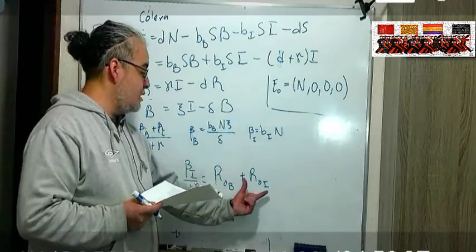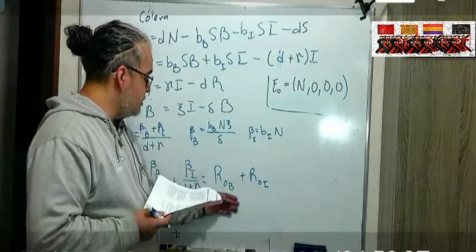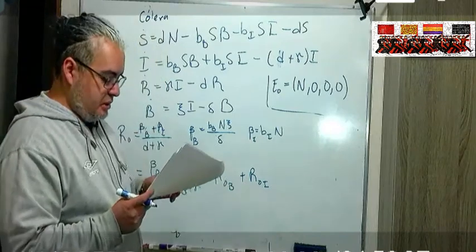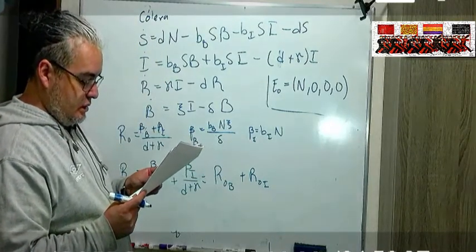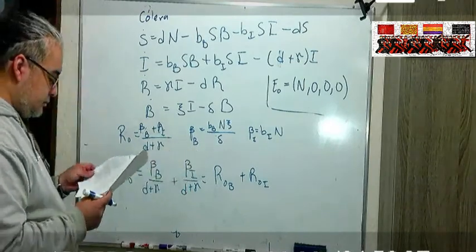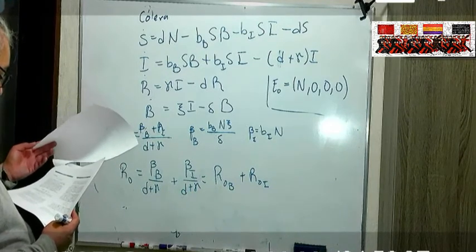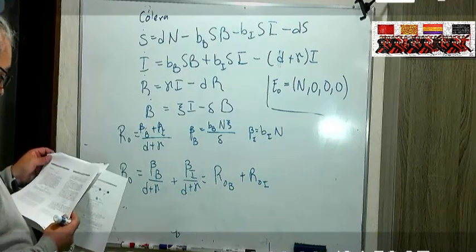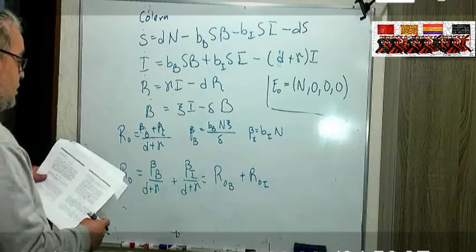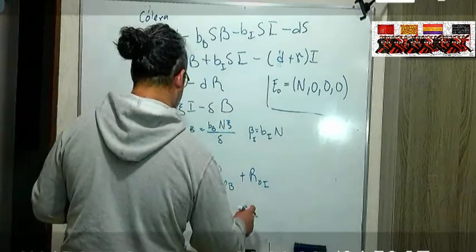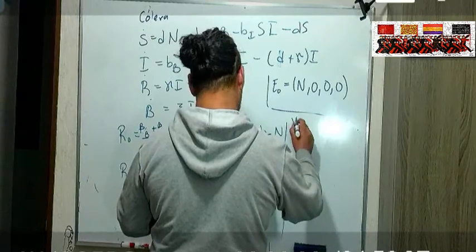Entonces cuál es el que tenemos que, cuál conviene más reducir. Cualquiera de los dos aumenta entonces el R0 va a aumentar, pero entonces cuál es el que se puede controlar más rápido. Entonces para eso hay que hacer el análisis de sensitividad.